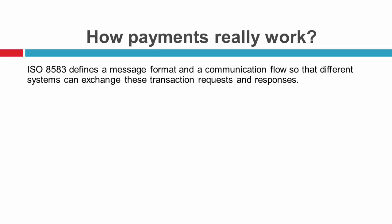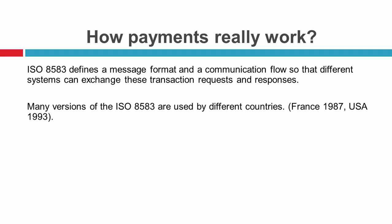The ISO 8583 defines a message format and a communication flow so that different systems can exchange transaction requests and responses. Many versions of ISO 8583 are used by different countries — for example, France uses the 1987 version and the USA uses the 1993 version.